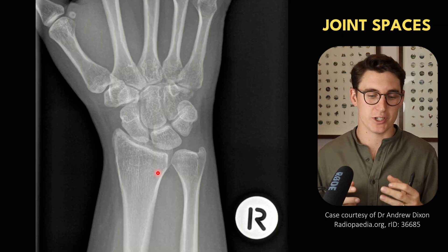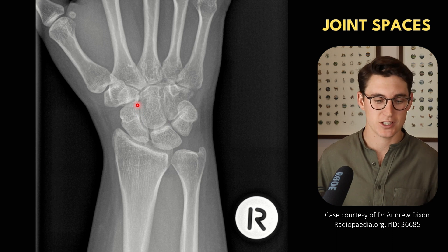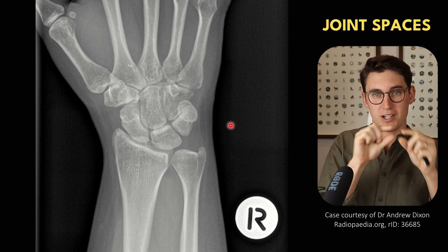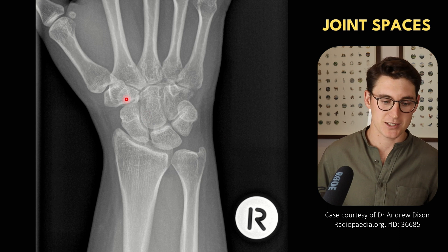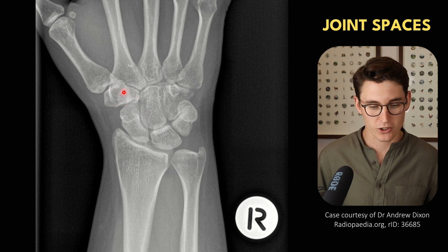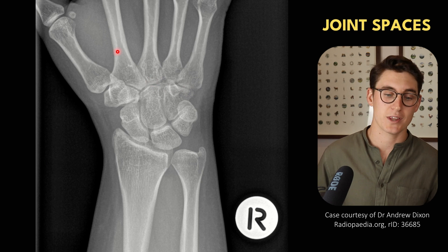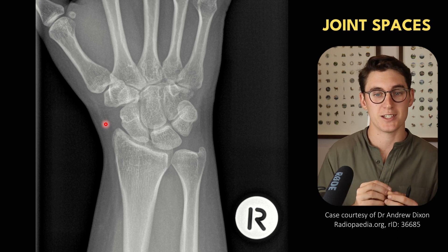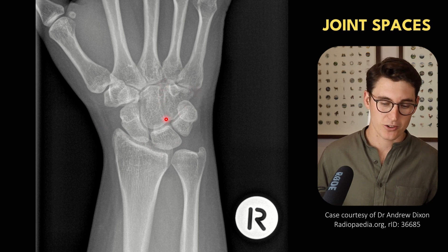Now that we've covered the actual bones within the wrist, let's look at the alignment of the wrist. The first thing you want to do is assess the space between the wrist bones themselves. We want a generally even space between the bones. The bones have formed complex shapes around one another, so some spaces like between the trapezium and trapezoid won't be visible very well. But the spaces we can see — like the distal row articulating with our metacarpals and between our scaphoid and capitate — we can follow all the way around to make sure we have even spaces without obliteration or expansion.